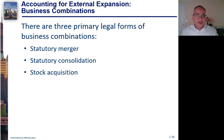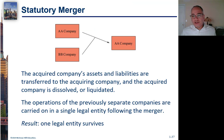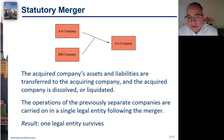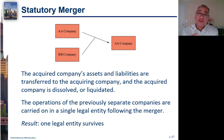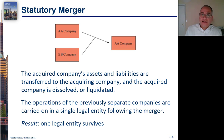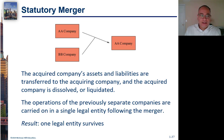The first kind is a statutory merger. This is a situation where all of the assets of the acquired company — what was the subsidiary — are moved into the parent company. When you're all done, you have just one company, the parent company. The subsidiary, the acquired company, is dissolved and liquidated.